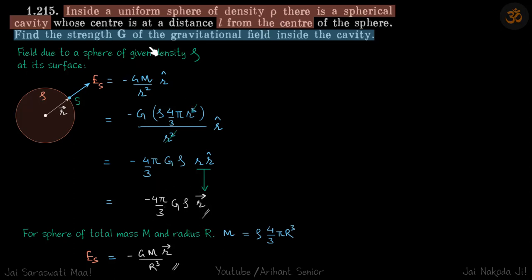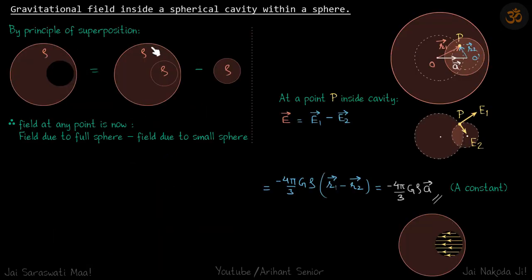Now let's solve this problem with the cavity. This is our sphere which has a cavity inside. By principle of superposition, we can put a small sphere inside the cavity so that it becomes a whole sphere, and then we can subtract the same amount.